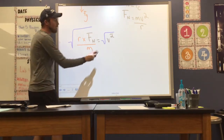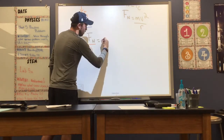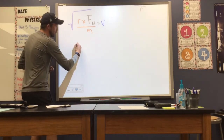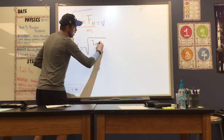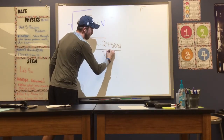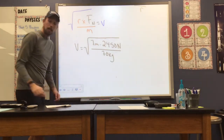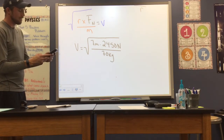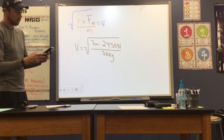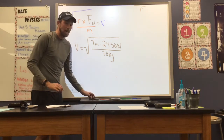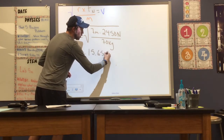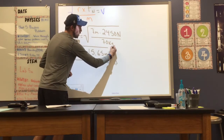So velocity equals the square root of radius times normal force divided by mass. Plugging in values: the square root of 7 meters times 2,450 newtons divided by 70 kilograms. Taking 7 times 2,450 divided by 70, we get a velocity of about 15.65 meters per second. As long as we are in SI units to start, we'll be in SI units at the end.